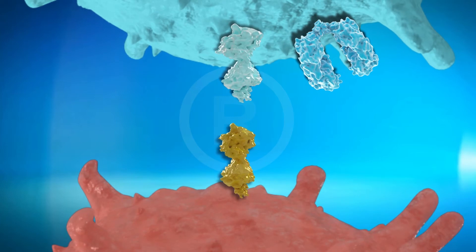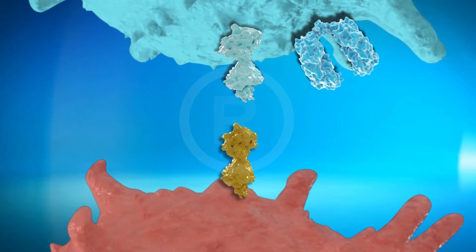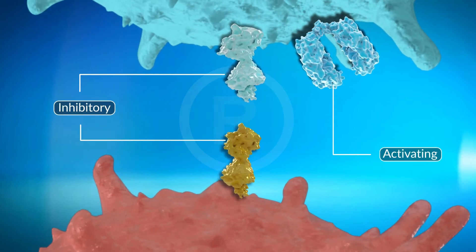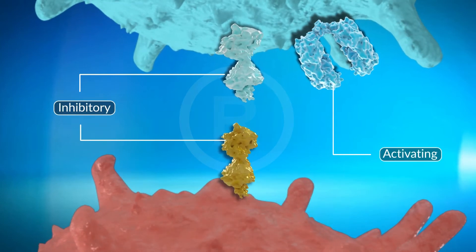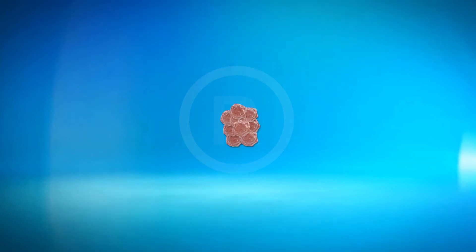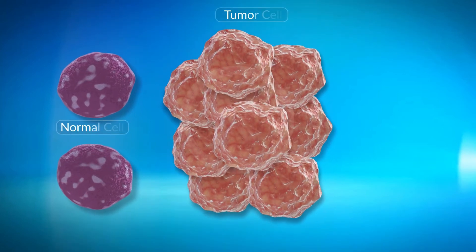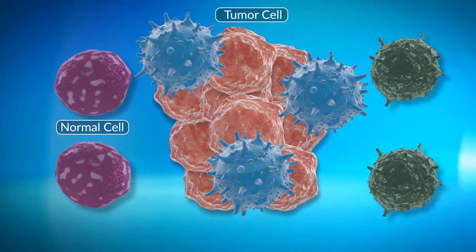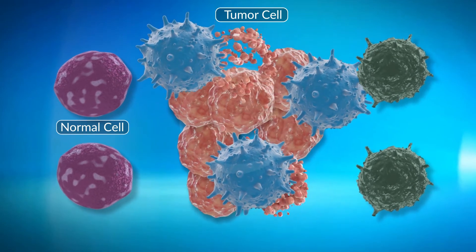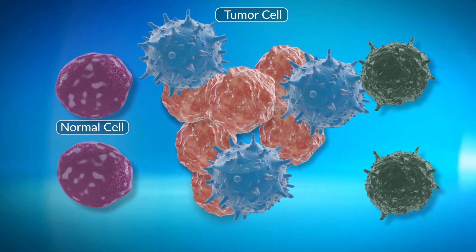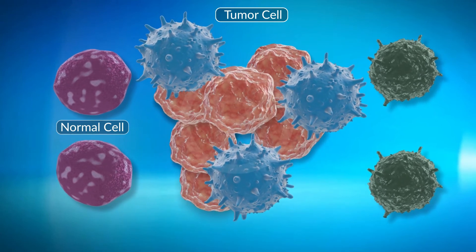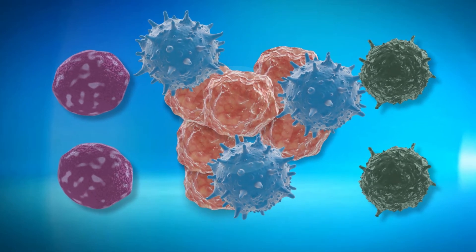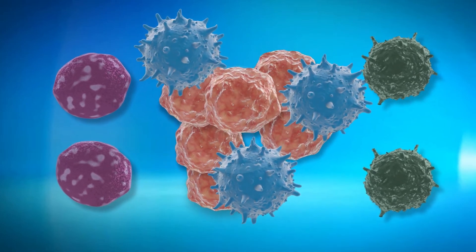The immune responses are finely modulated through different pathways. While the activation of specific signaling pathways can generate an immune response, the activation of inhibitory pathways can stop the immune response. These pathways serve as immune checkpoint pathways that ensure a balanced immune response against non-self cells such as tumor cells, without harming the host system. However, cancer cells have the capability to adapt and genetically modify themselves, and also inactivate immune cells to escape the immune system and proliferate to form a tumor.